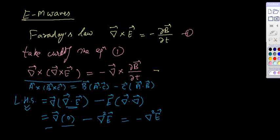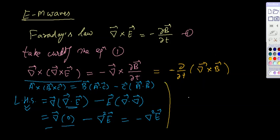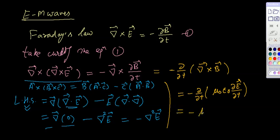For the right-hand side: minus del cross (∂B/∂t) can be written as minus ∂/∂t (del cross B). Now applying Ampere's law, del cross B equals μ₀ε₀ ∂E/∂t. Substituting, the right-hand side becomes minus μ₀ε₀ ∂²E/∂t².